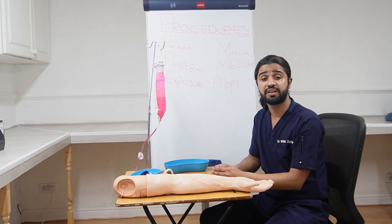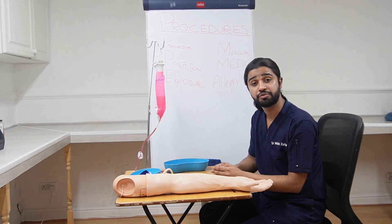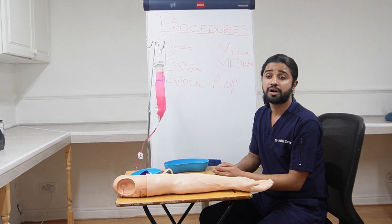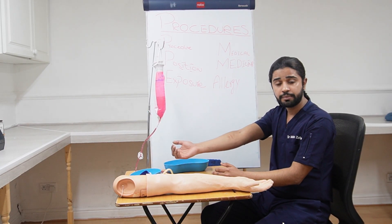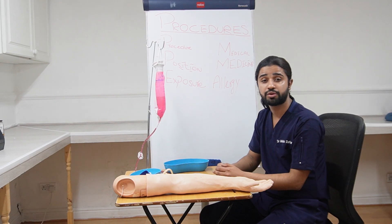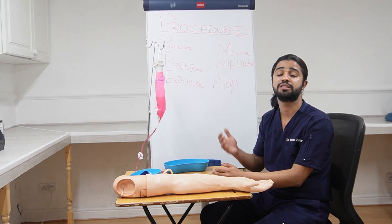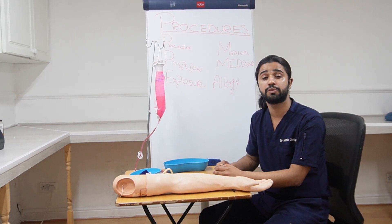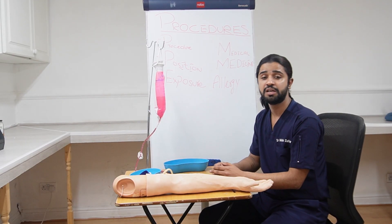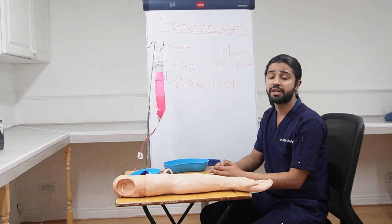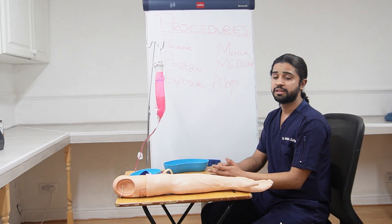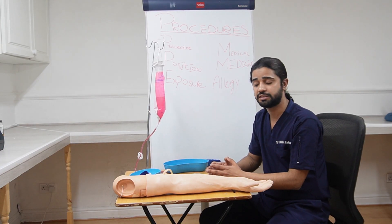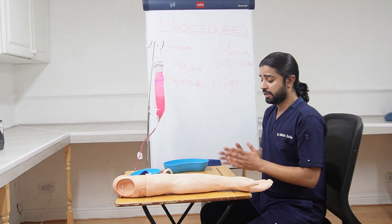Then explain the procedure to the patient. Tell him: 'I'm going to use a thin needle to insert into your vein on the forearm — you might feel a sharp scratch, please bear with me, I will try to be as quick and as gentle as possible.' Next, ask the patient to straighten his arm. For exposure, if he's wearing half sleeves you can note that he is adequately exposed; otherwise ask him to roll up his sleeves.